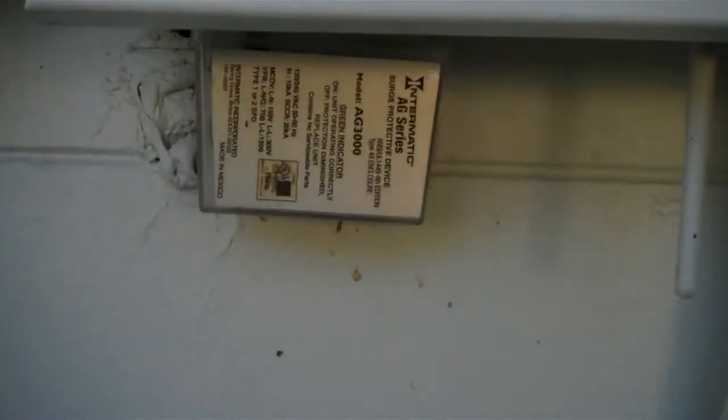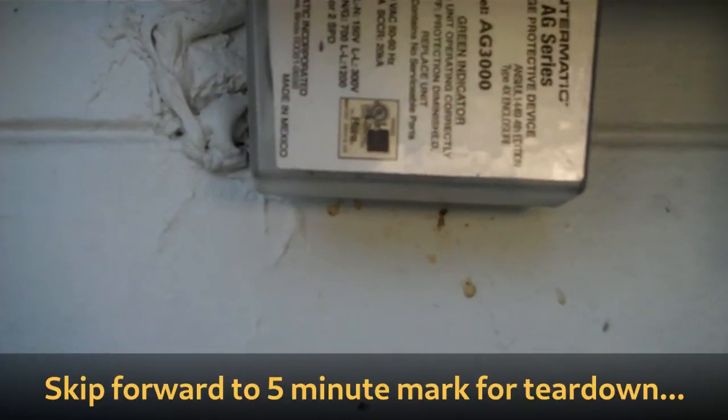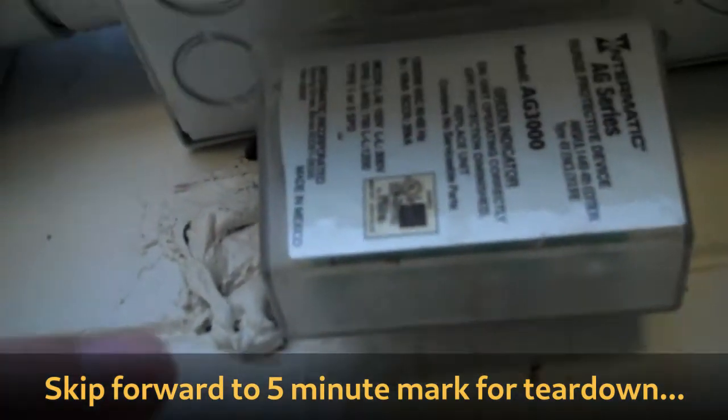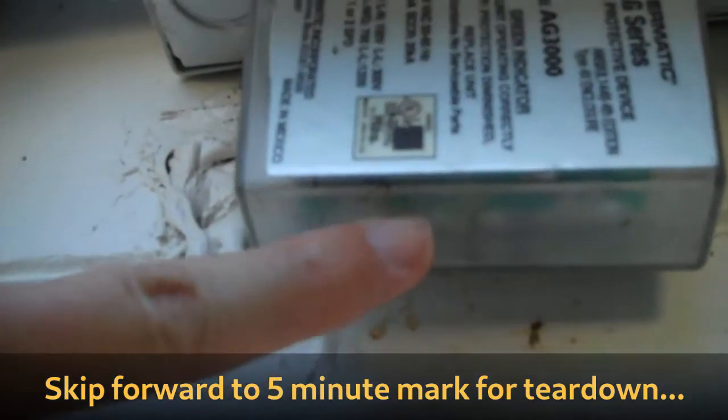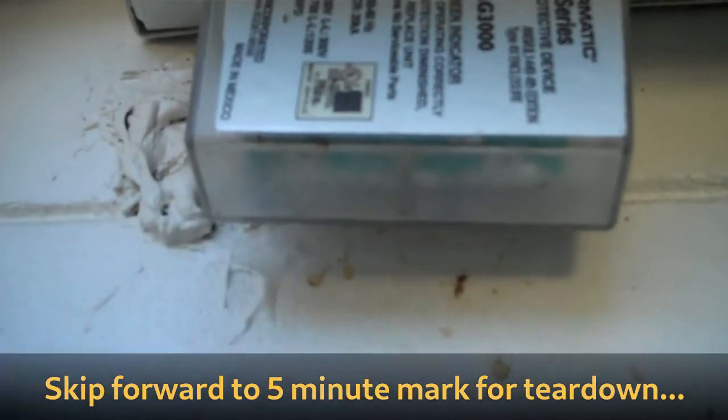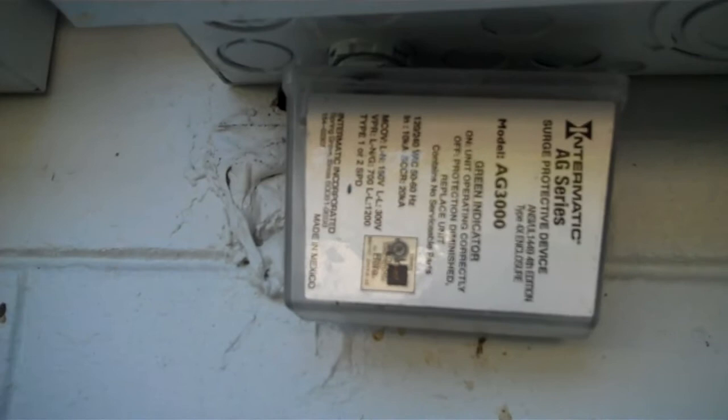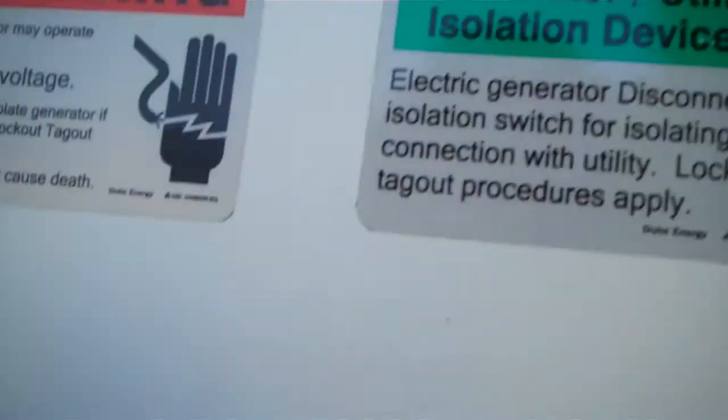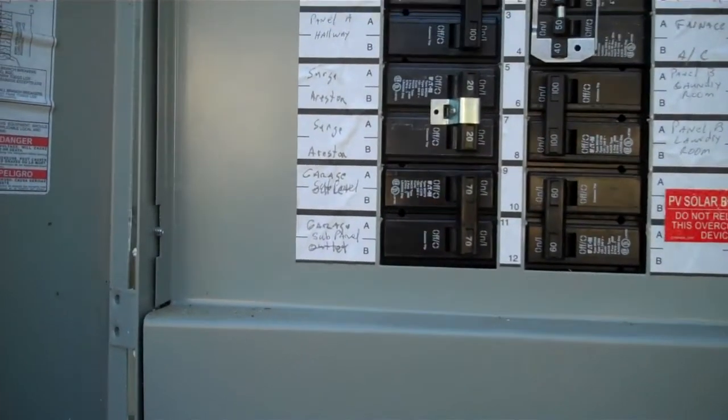On the outside of my house, I have this surge protective device, and it's supposed to have a green light down here that says I'm working correctly, but it doesn't, which means it's either failed or a surge happened and it did its job to absorb the surge, which caused it to fail. Since none of my electronic devices have died, I'm going to guess it probably did its job, but it needs to be replaced.